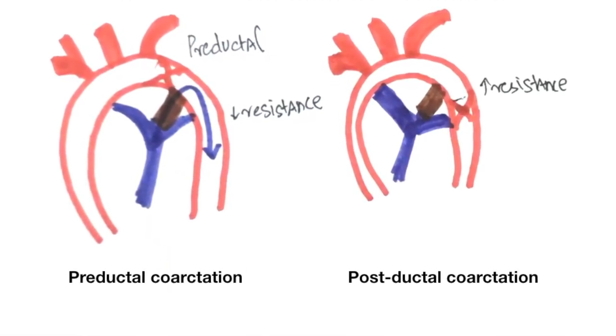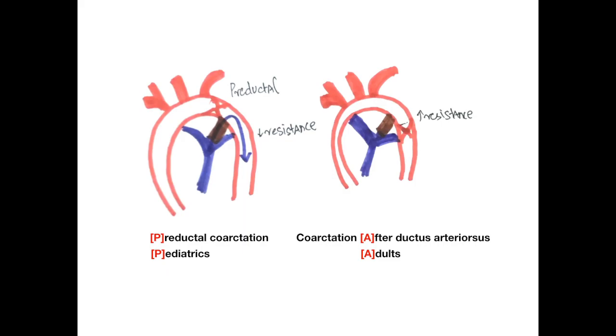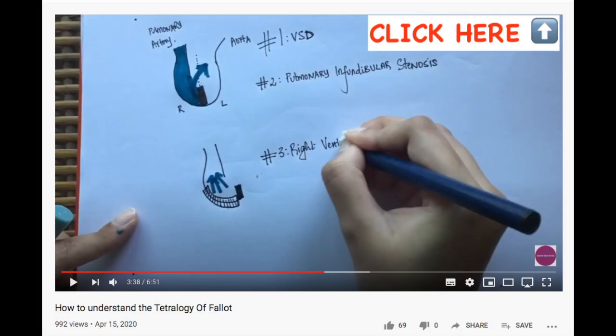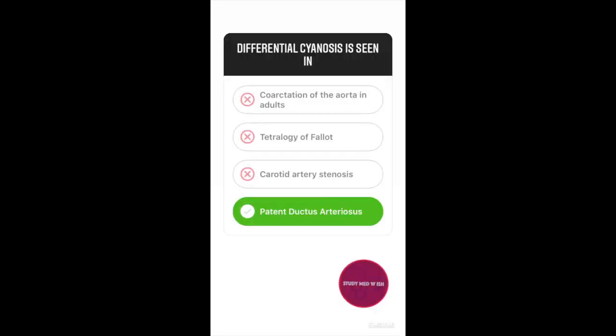To memorize this, remember that pre-ductile is for pediatric cases and coarctation after the ductus arteriosus is seen in adults. Cyanosis in case of the tetralogy of fallot is seen when the patient is squatting, crying or is doing a physical activity. I have explained the mechanism in detail in this video. Carotid artery stenosis is not associated with differential cyanosis.